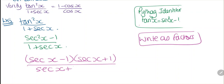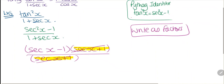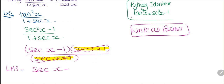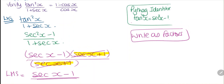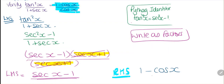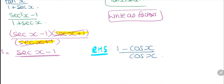Now I can see that these terms are the same and they will simplify, so on my left hand side I am left with secant x minus one. Now I'm going to look at my right hand side — here's my right hand side — and I have one minus cosine x divided by cosine x.